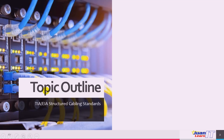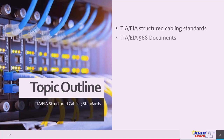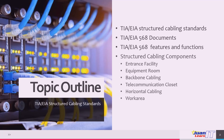For the topic outline, we will be dealing with the TIA EIA structured cabling standards — describing the cabling standard, the TIA EIA 568 documents, the features and functions, and the structured cabling components, which includes the entrance facility, equipment room, backbone cabling, telecommunication closet, horizontal cabling, and work area.